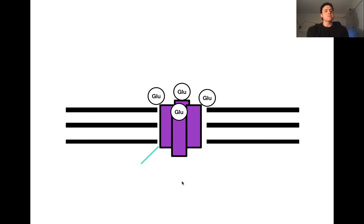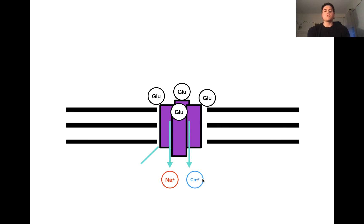The ions that pass through this receptor are first sodium, which flows down its electrochemical gradient from outside the cell to inside. The second ion is calcium, which also flows down its electrochemical gradient from outside to inside. The last ion is potassium, which flows down its electrochemical gradient from inside the cell to outside.